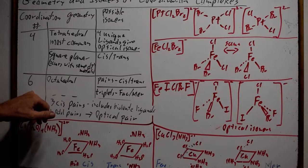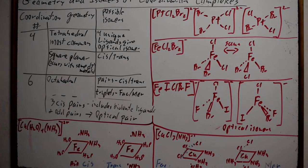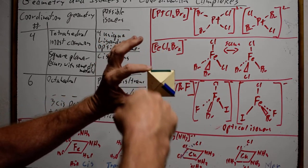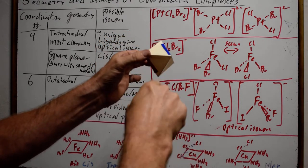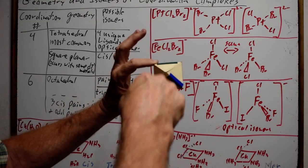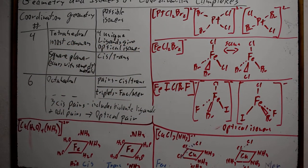A lot of these complexes have a coordination number of six, which forms an octahedral geometry. An octahedron has six vertices and eight sides. We have a square — four vertices — and then a peak above and below that square, giving six vertices total. There are four sides on top and four sides on the bottom, giving eight sides total, hence octahedral, even though there are six ligands or six donor atoms.